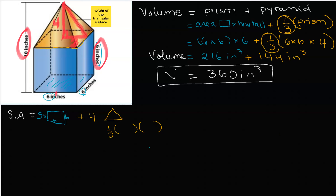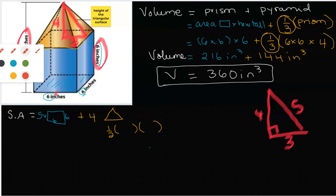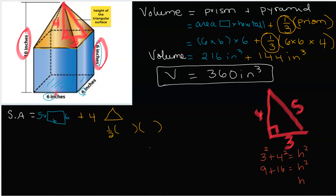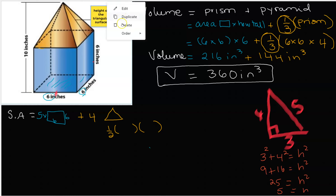Looking at that triangle — we have three and four — this must be five. We know the 3-4-5 right triangle, but if we didn't, we would say three squared plus four squared equals hypotenuse squared: nine plus sixteen equals twenty-five, so the hypotenuse is five. The slant height of the yellow triangle is five inches.